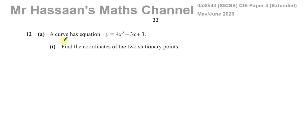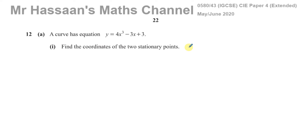This is question 12, Part A1, where it's telling us about a curve which is a cubic curve: y equals 4x cubed minus 3x plus 3. We've got to find the coordinates of the two stationary points on this curve. This is one of those new topics which started in the same year that this exam was set — the first time such a question appeared for this new syllabus from 2020 onwards.